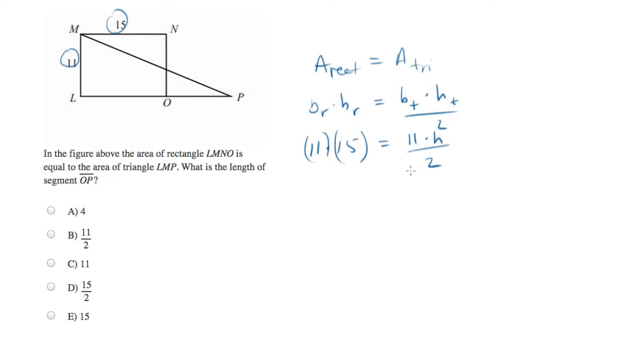Now we've got one equation and one variable, and this can be solved. So let's multiply both sides by 2. And what we end up with is, I'm going to put this into a calculator, 330 equals 11h. And 330 nicely divides by 11, which is what we're going to have to do next, to equal 30.